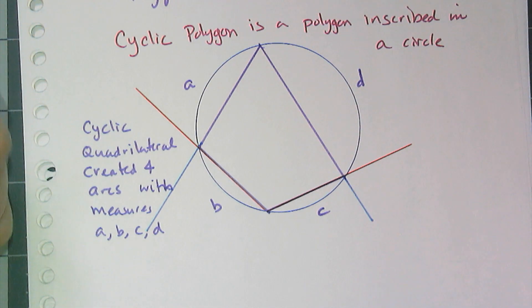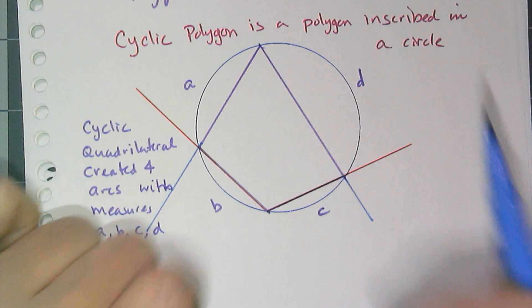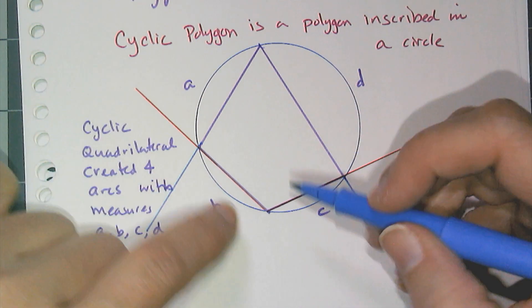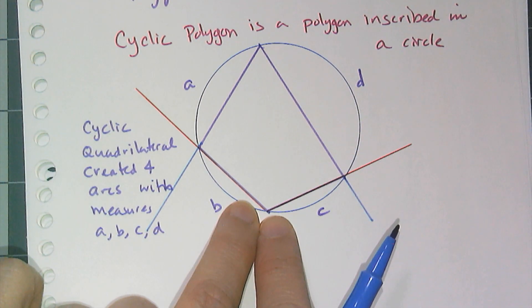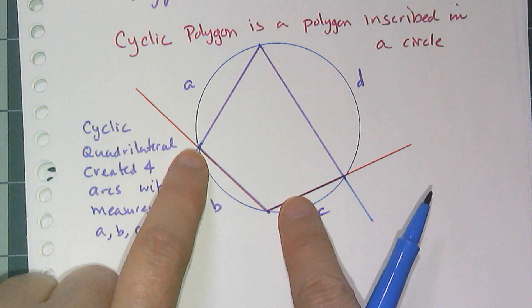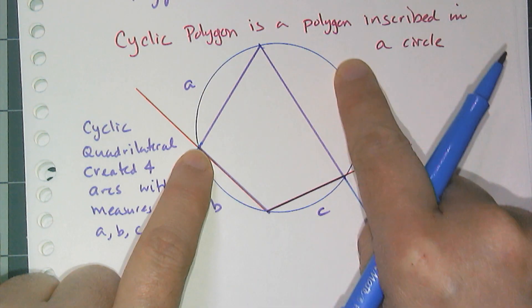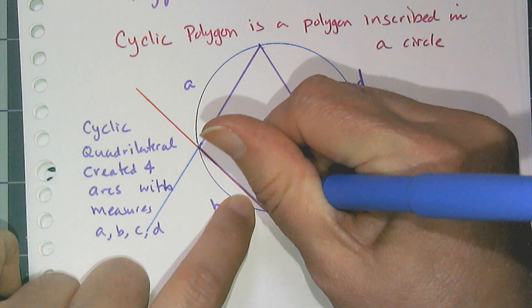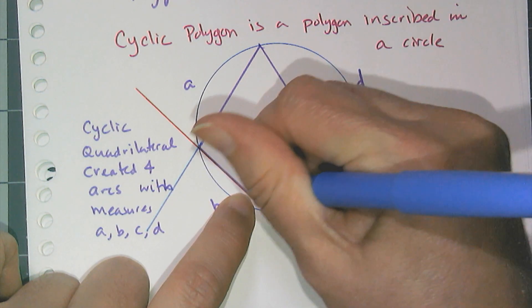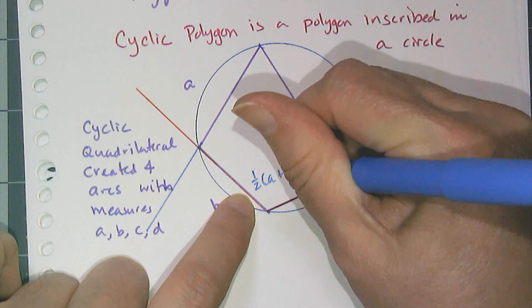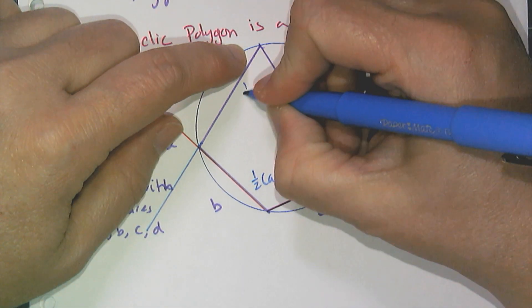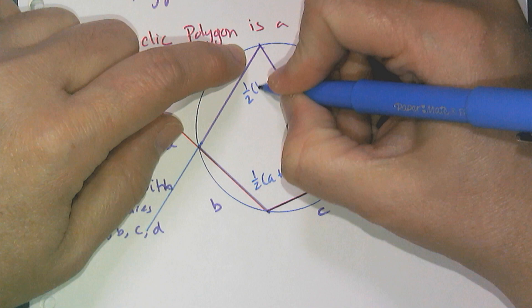So that means I know the measures of those angles in relation to a, b, c, and d. This angle here has got to be half of the measure of the arc. So this angle here has a measure of one half a plus d. And this angle here has to have a measure of one half of b plus c.